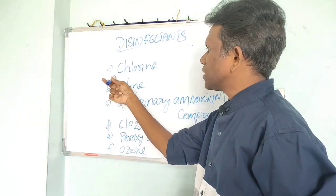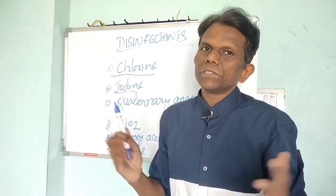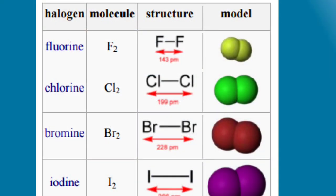Let us discuss about Chlorine first. Chlorine and Iodine come under the Halogens. We call them Halogens because a Halogen is an element that, when it reacts with a metal, can produce salts. Halogens include Chlorine, Bromine, Iodine, etc. These are all reactive. Compared with other disinfectants, the Halogen group — Chlorine, Bromine, Iodine — are more reactive.